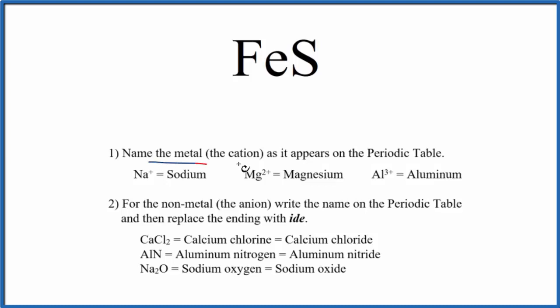First we name the metal as it appears on the periodic table. Fe, that's the metal, that's iron. Then we name the nonmetal as it appears on the periodic table. S is sulfur, and we replace the ending with -ide.